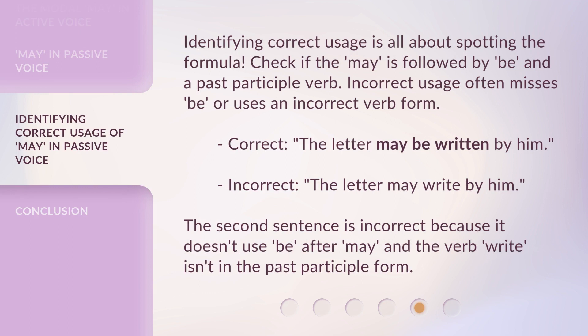Identifying correct usage is all about spotting the formula. Check if may is followed by be and a past participle verb. Incorrect usage often misses be or uses an incorrect verb form. Correct: 'The letter may be written by him.' Incorrect: 'The letter may write by him.' The second sentence is incorrect because it doesn't use be after may, and the verb write isn't in the past participle form.